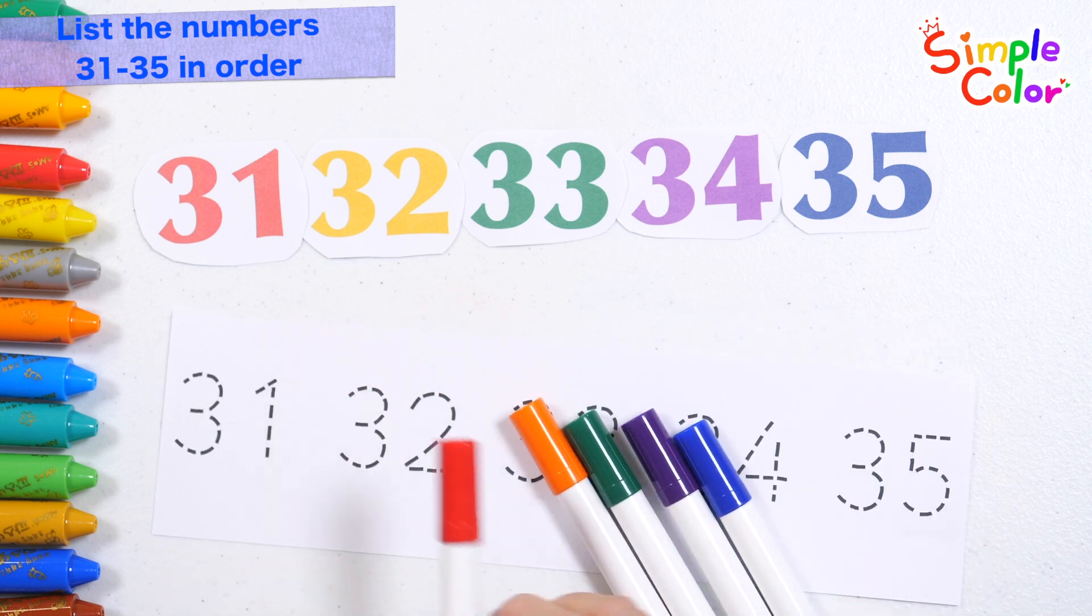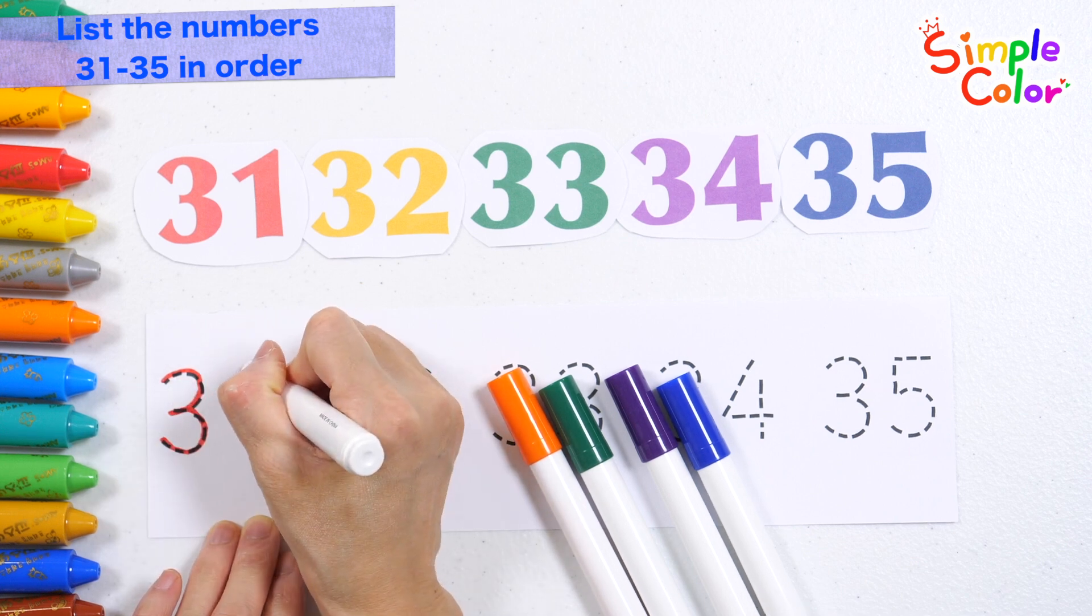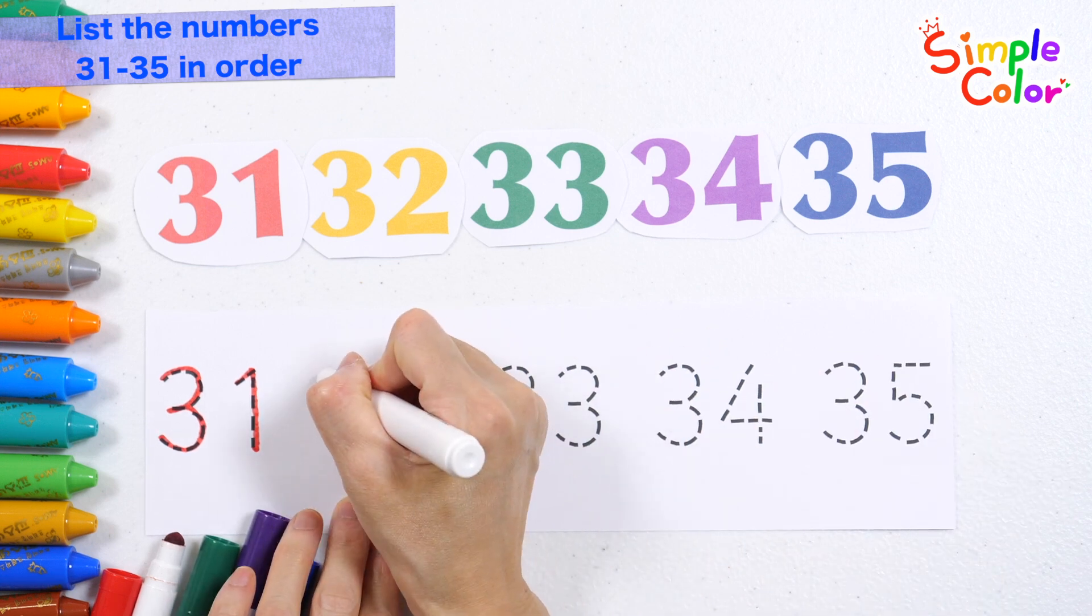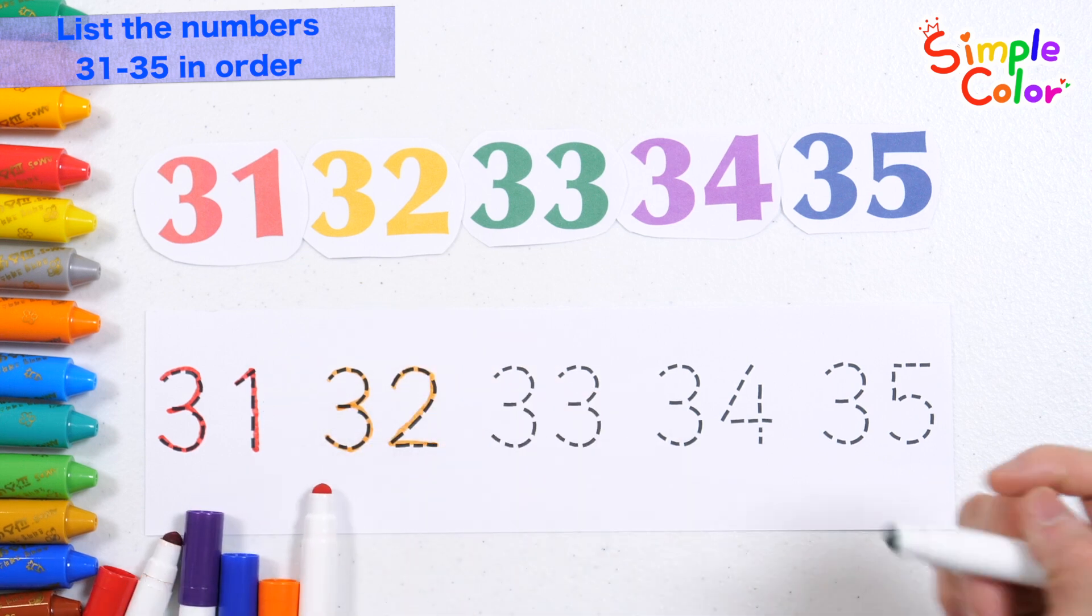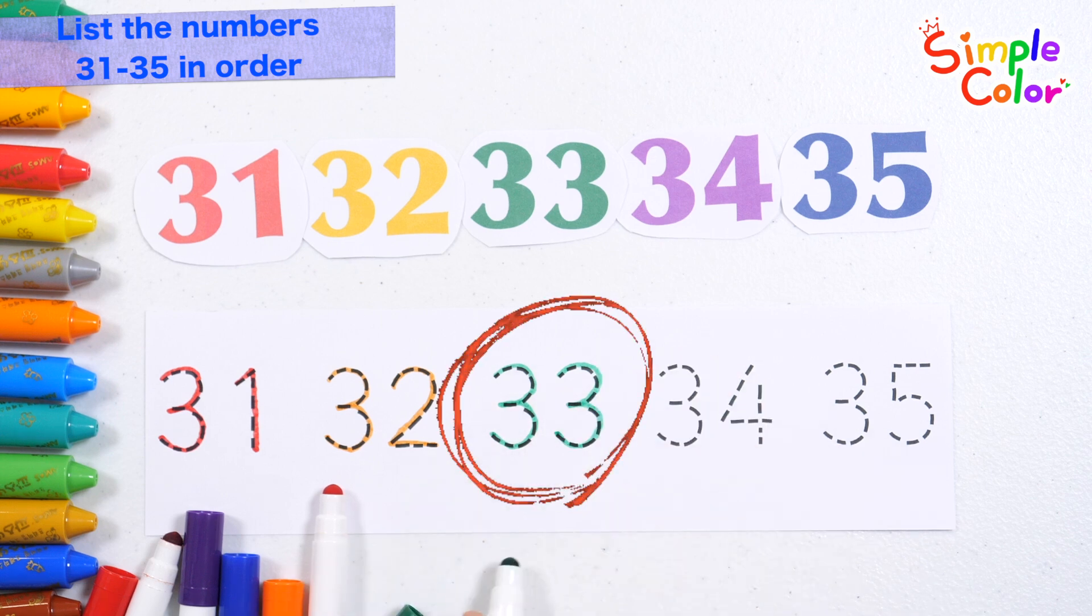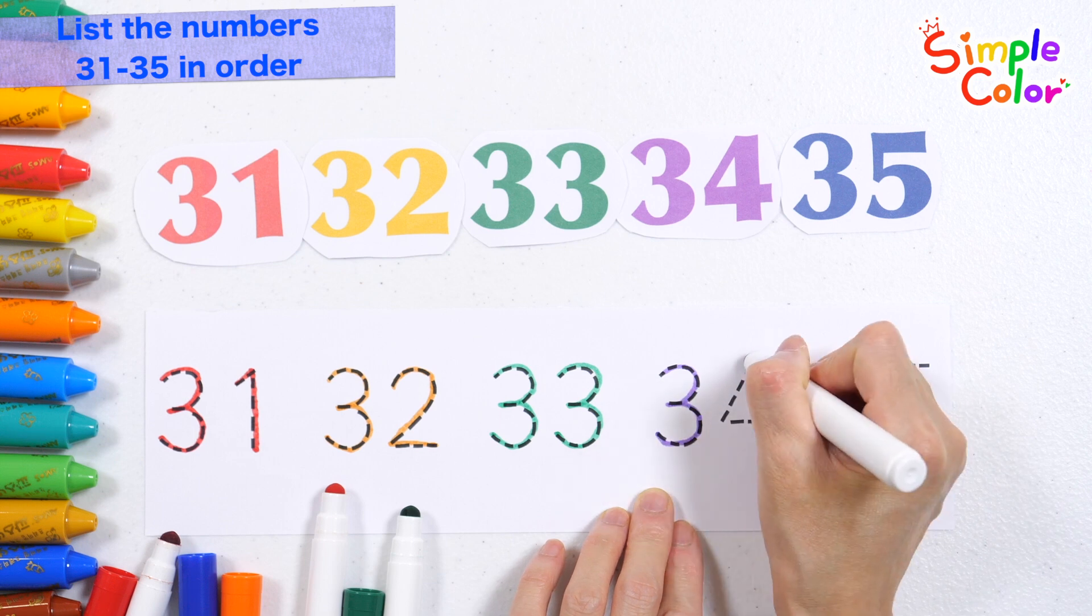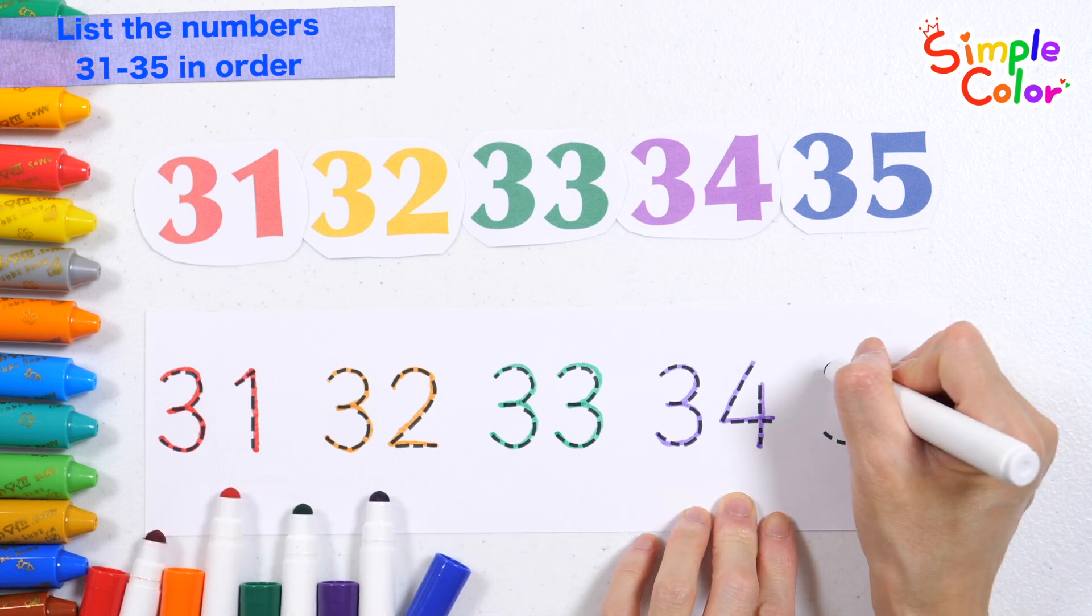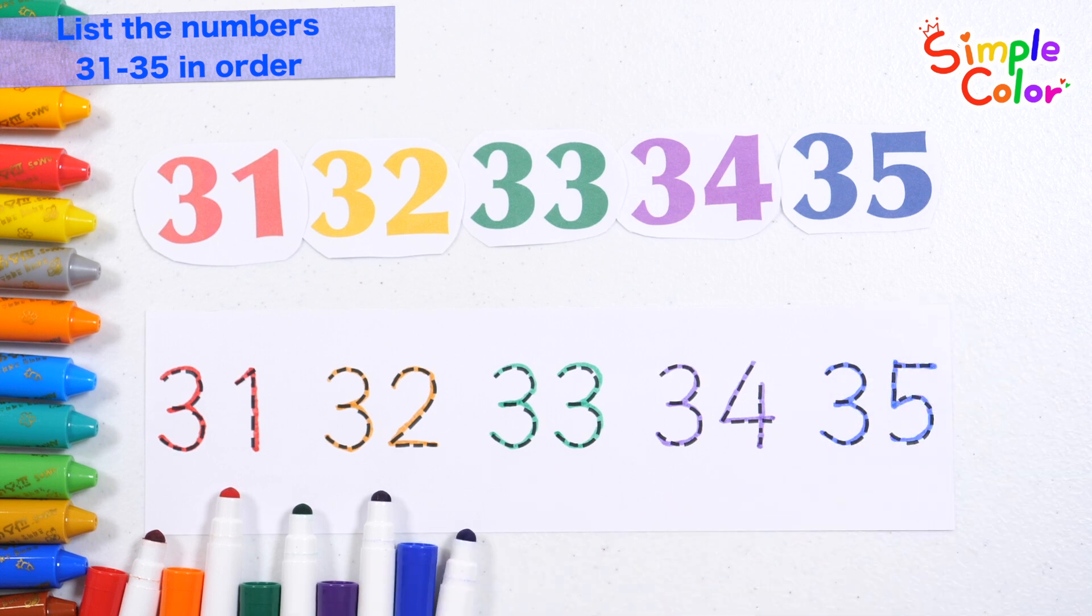Let's write them in order, starting from small numbers. 31, 32, 33, 34, 35. Great job!